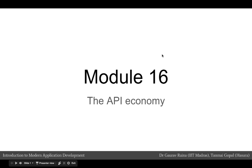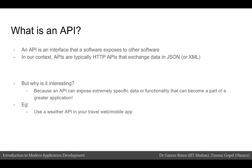In this very short non-technical module, we are going to talk about what we mean by the API economy. So far we have understood in a fair amount of detail that an API is basically an interface that a software exposes to other software. For example, our client side code uses APIs to talk to the web server code, and in our context, APIs are typically HTTP APIs that exchange data in JSON or XML.